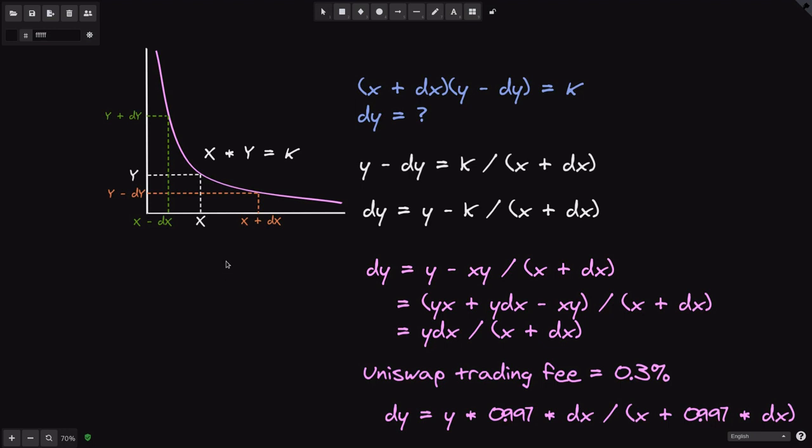So in summary, on Uniswap, the price of a token is calculated using X times Y equals K. And the exact amount of tokens you'll get is equal to this equation over here. Thanks for watching, and I'll see you later.